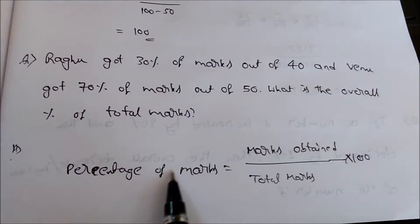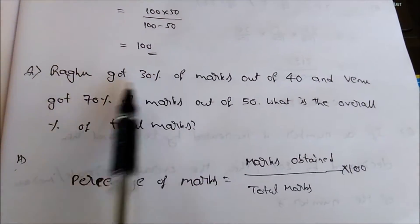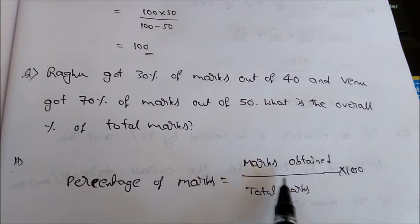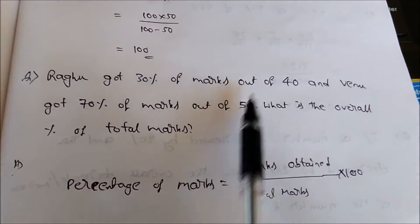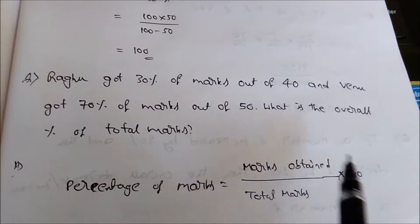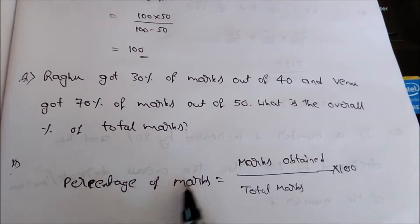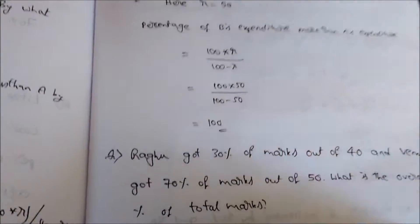The formula is very simple: percentage of marks obtained equals marks obtained — that is the original marks they have obtained combined — divided by total marks, that is the two exams' marks combined, multiplied by 100. This gives the overall percentage of total marks.